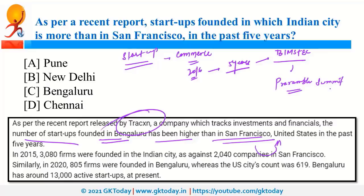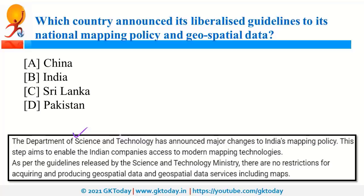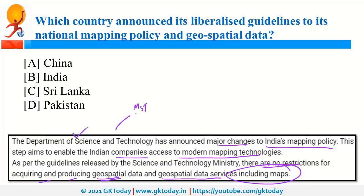India announced liberalised guidelines for its national mapping policy and geospatial data. The Department of Science and Technology (DST) under the Ministry of Science and Technology announced major changes, enabling Indian companies to use modern mapping technologies. There is now no restriction on the acquisition and production of geospatial data and services, including maps. Under the Ministry of Science and Technology, there are two departments: DBT and DST.